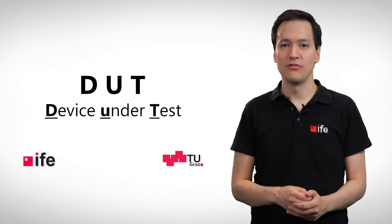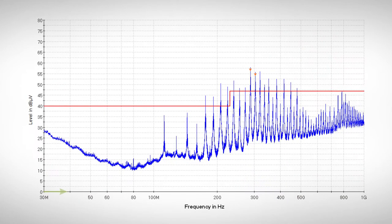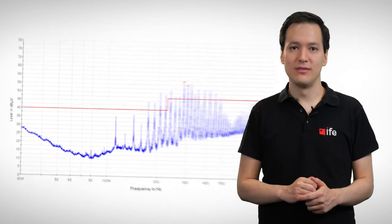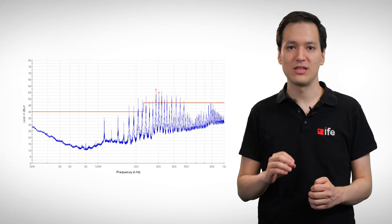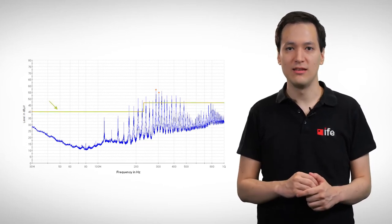On the display of the EMI receiver, we can see a graph where the x-axis shows the frequency interference in a logarithmic scale, and the y-axis, the measured interference in dB-microvolt. In addition, some limit lines can be displayed which must not be exceeded by the input signal. Different standards propose different limit lines and different methods on how to measure the interference.